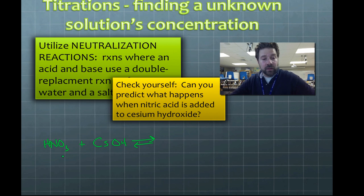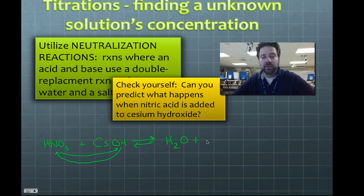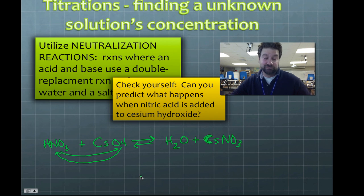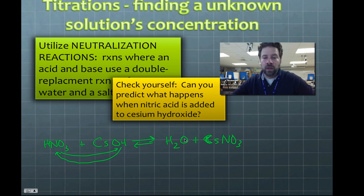On the product side we trade anions: H pairs with OH to give H2O (water), and Cs pairs with NO3 to give CsNO3. Checking the balance: H is 2 on each side, N is 1 on each side, and O is 4 on each side — the equation is balanced.